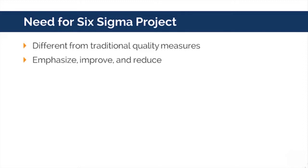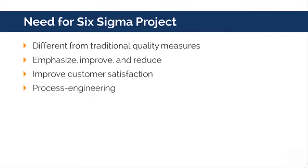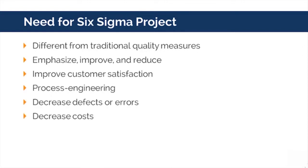Some other benefits include improved customer satisfaction and improved internal processes. This can be done through either process reengineering, which is a major process change, or process improvement, which is a minor process change. Additional benefits include decreased defects or errors, decreased costs, and long-term viability and competitive advantage.